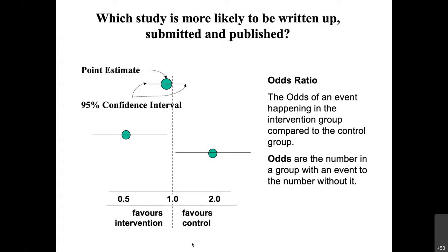Does this make sense? I'm happy to clarify any uncertainty. A question from the chat: in this type of forest plot, is the event always negative, or can we have an inverted forest plot when looking at a positive event — for example, clearance of a virus from our system? That's correct. A very clear example of a positive event is becoming pregnant for an infertile patient, or being alive for a cancer patient after many years.